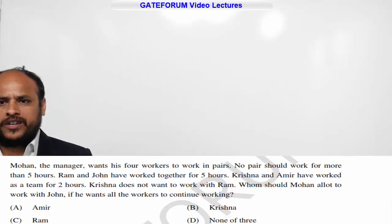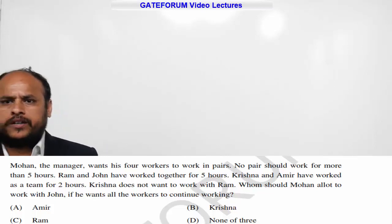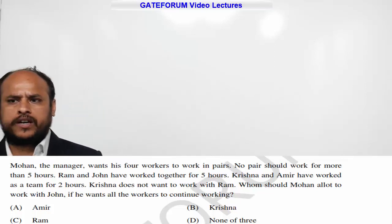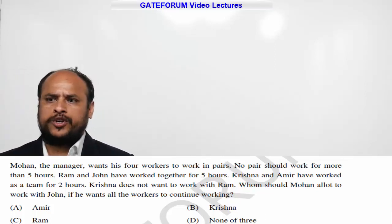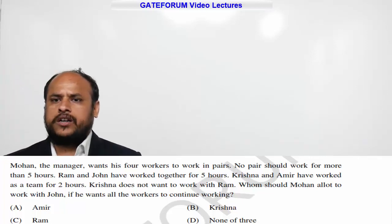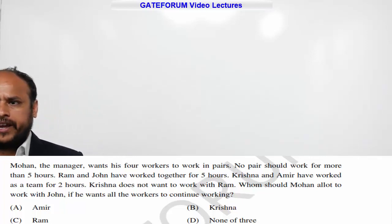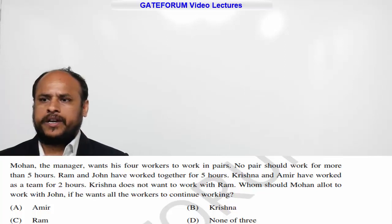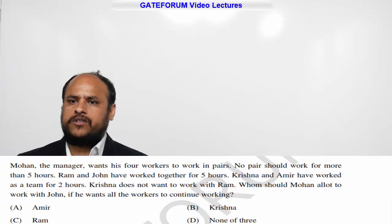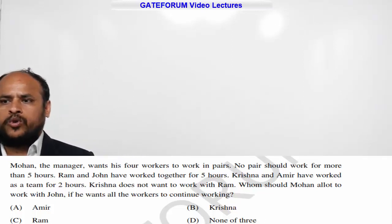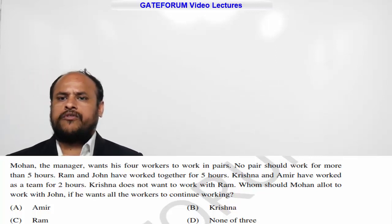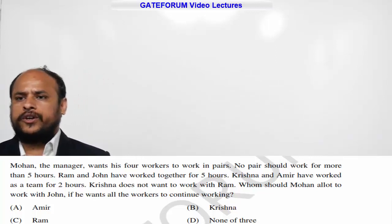This question belongs to Civil Set 2. The question is: Mohan, the manager, wants his four workers to work in pairs. No pair should work for more than five hours. Ram and John have worked together for five hours. Krishna and Amir have worked as a team for two hours. Krishna does not want to work with Ram. Whom should Mohan allot to work with John if he wants all the workers to continue working?